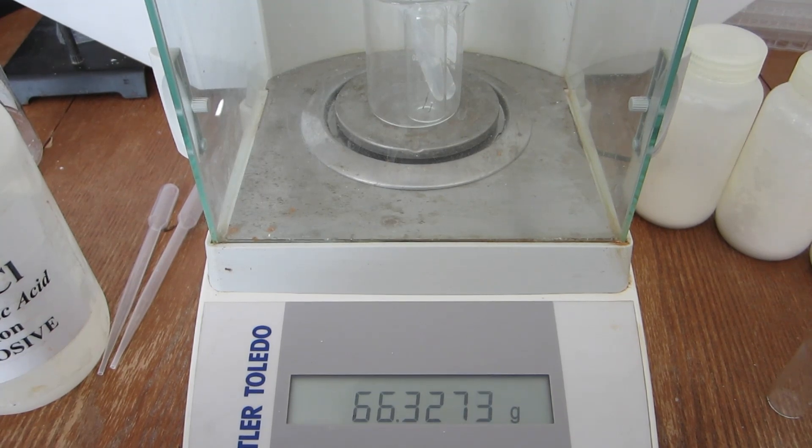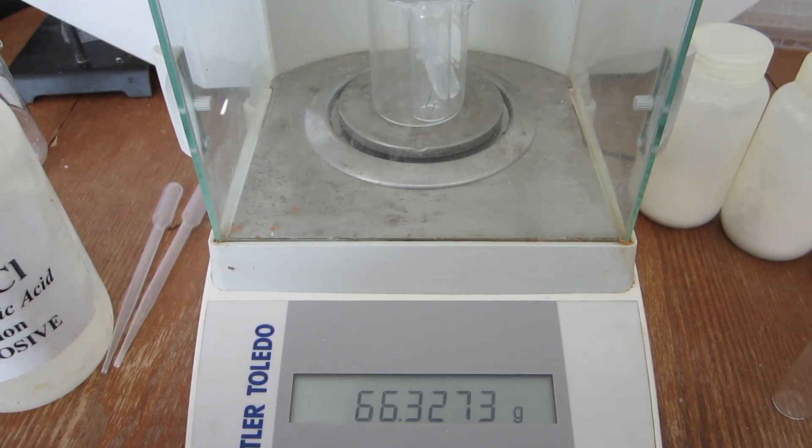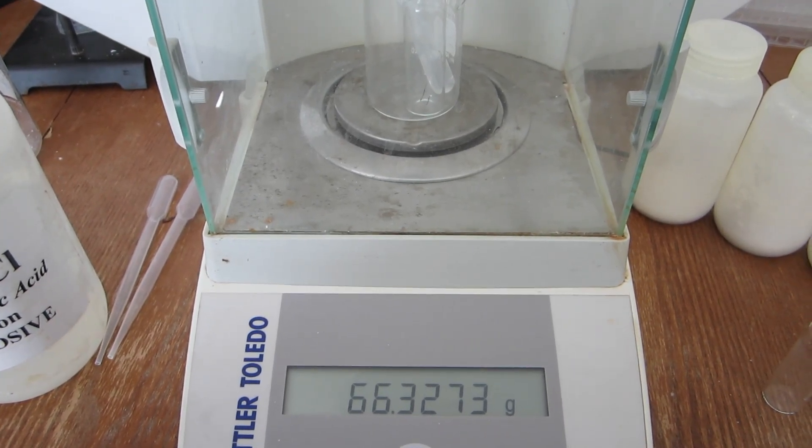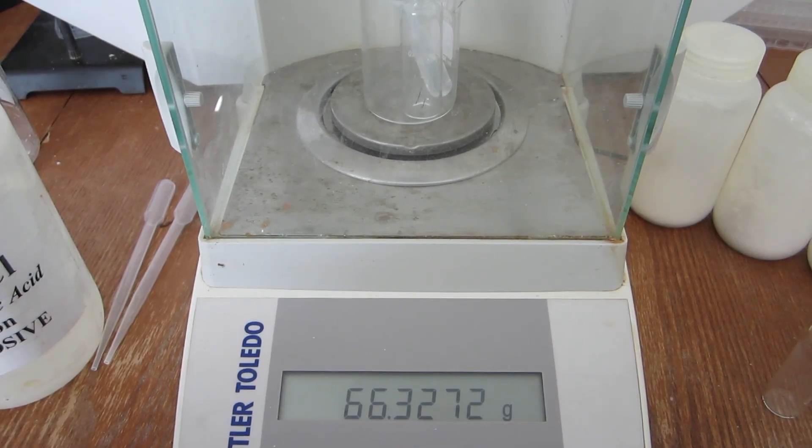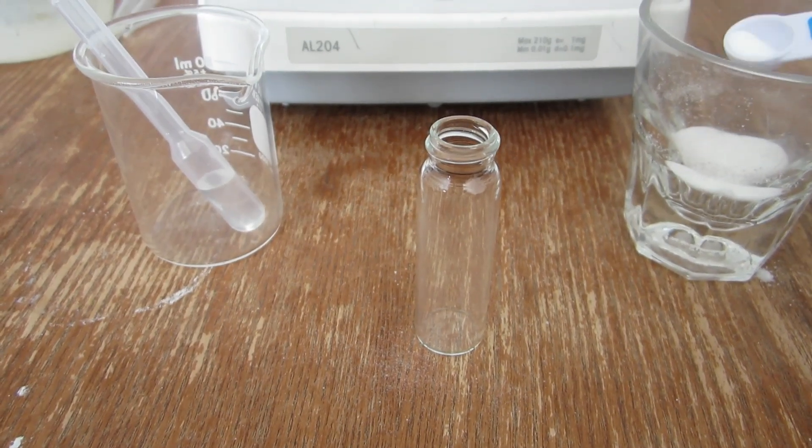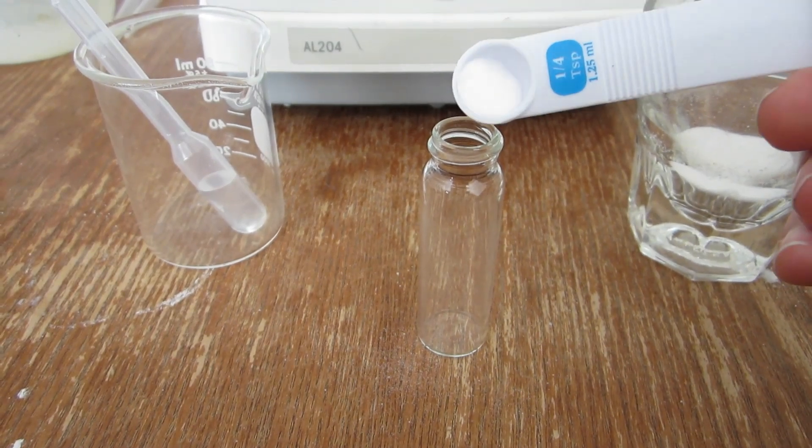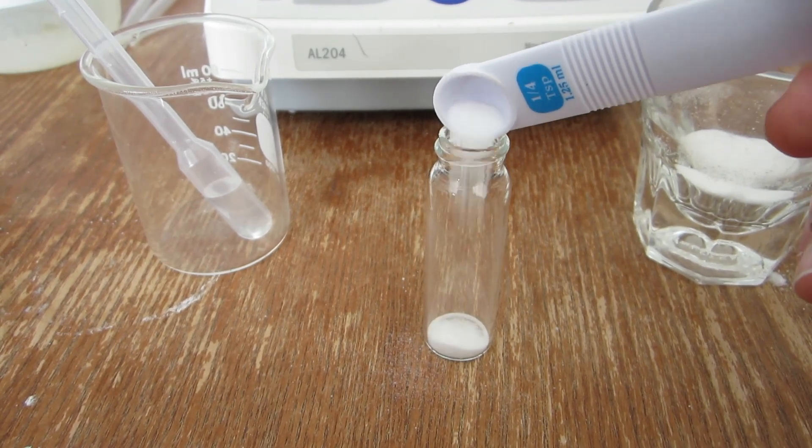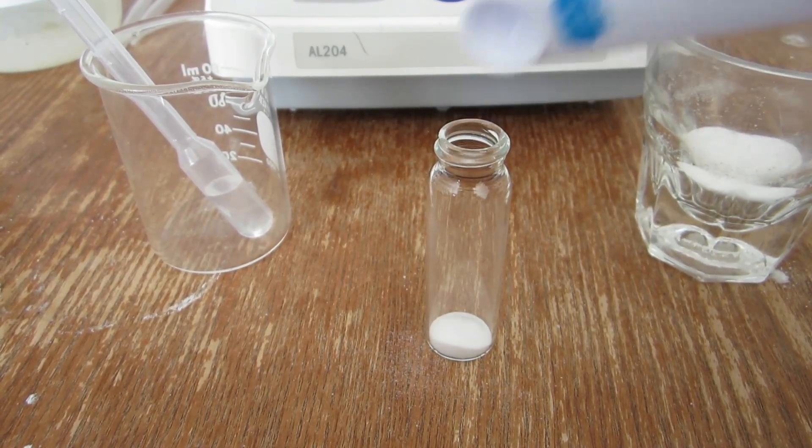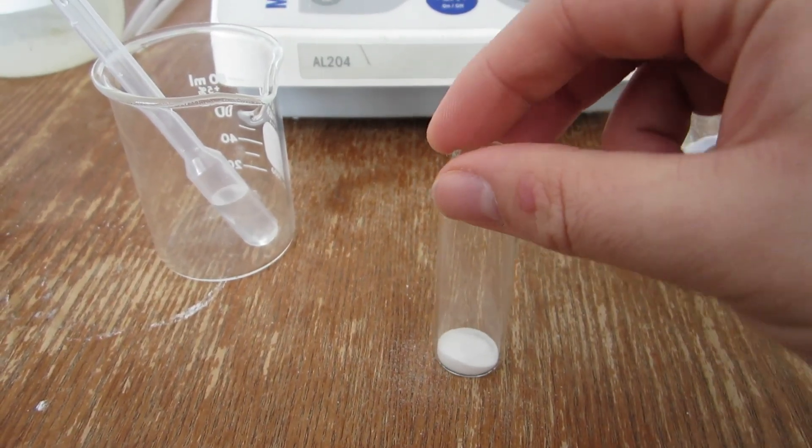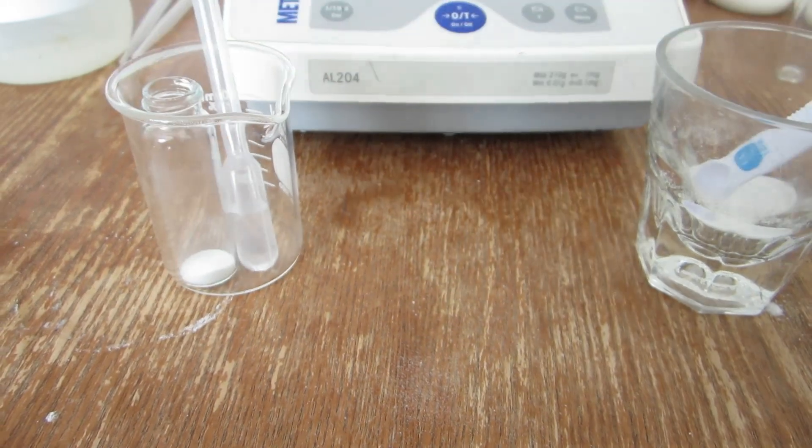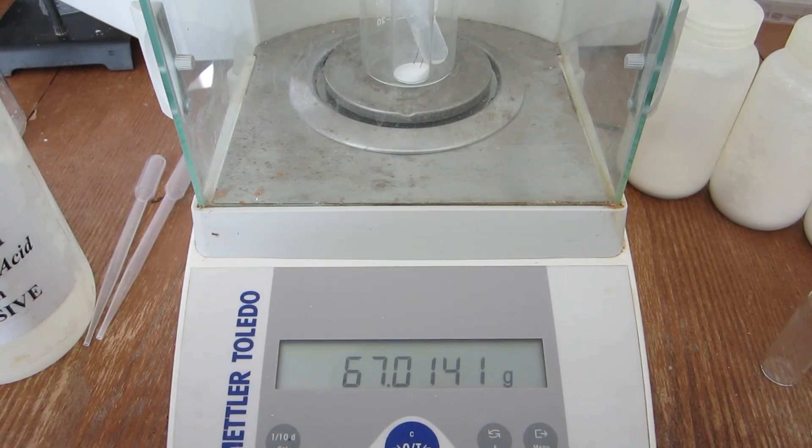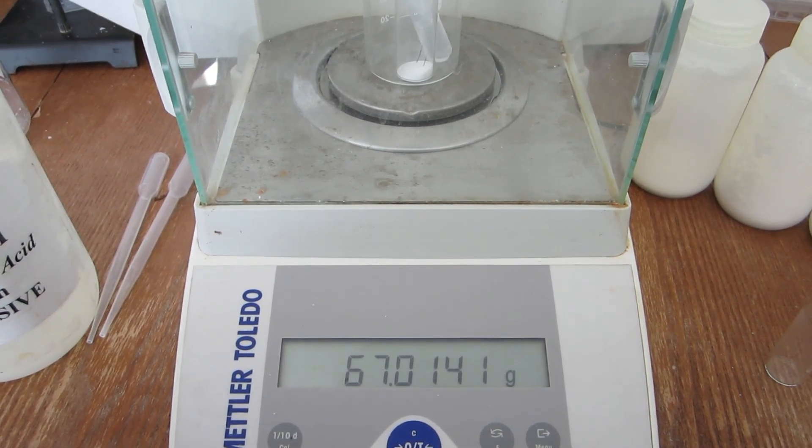The starting mass for trial number two can be seen here. This is the mass of the empty beaker, vial, and the acid. Again, approximately one half gram is added to the sample vial, and the overall mass is recorded afterwards. The total mass of the containers, acid, and sample can be seen here.